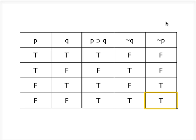At this point we have completed our truth table. Now the question is: how can we use the truth table to determine whether or not the argument is valid? What we're looking for — and this is the crucial step — is a row on which both of the premises are true, and yet the conclusion comes out false.